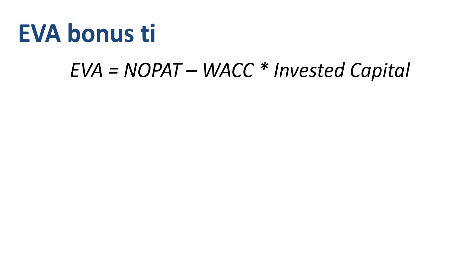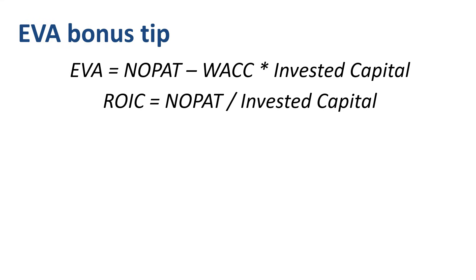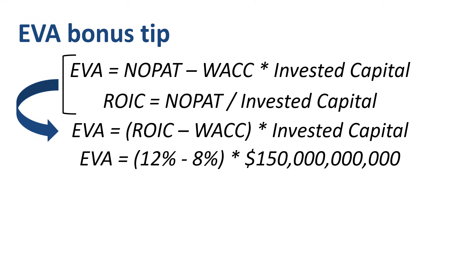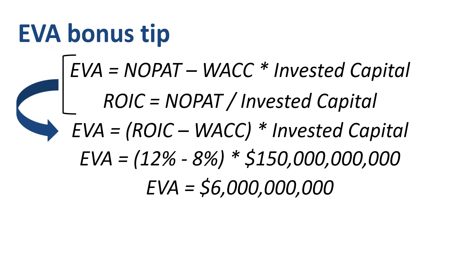Here's a bonus tip to put EVA into perspective. If EVA is NOPAT minus WACC times invested capital, and ROIC is NOPAT divided by invested capital, then you can also write the EVA formula as ROIC minus WACC times invested capital. With the same numbers: 12% minus 8% times $150 billion equals 4% times $150 billion, which is $6 billion of EVA.